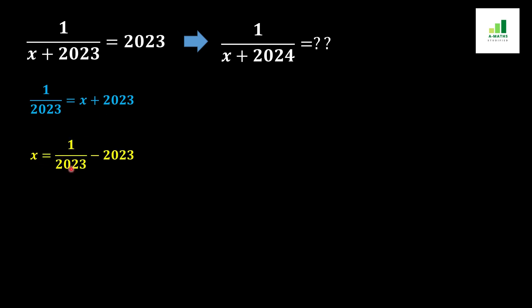We will get x equals 1 over 2023 minus 2023. Now in the next step we should simplify this equation to get the answer. For this purpose we should replace this x from this value.